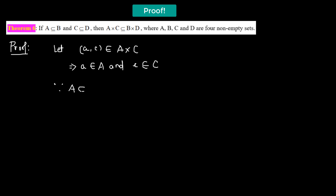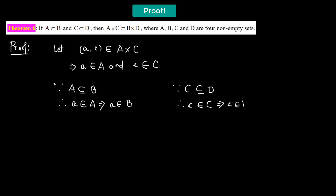Now we use the given conditions. Since A is a subset of B, any element a that belongs to set A must also belong to set B. Also, since C is a subset of D, any element c which belongs to set C must also belong to set D.